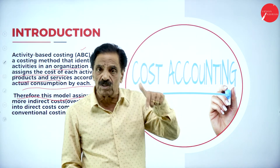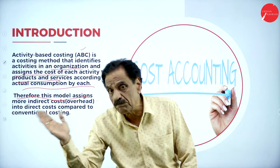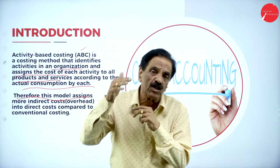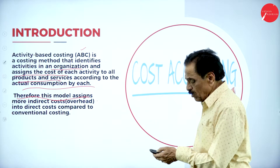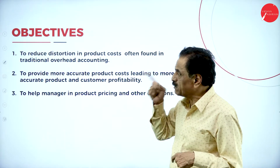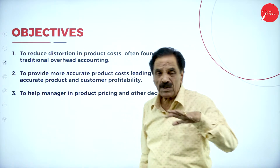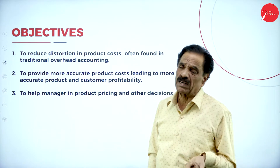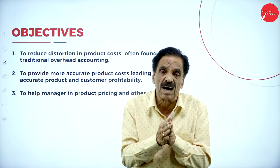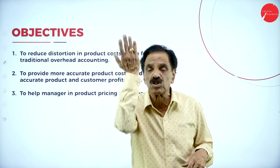In the traditional method, we allocate rent based on floor area, lighting based on light points, and welfare expenses by number of employees. In the modern technique, we find the activity and determine costing according to that activity. The first major objective of ABC is to reduce the cost, because cost is expenditure on a product, and if cost goes up, profit will come down.